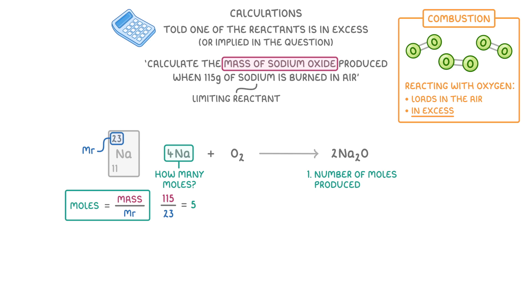Then by looking at our balanced equation, we can find the ratio between the sodium and sodium oxide, which is 4 to 2, or more simply 2 to 1. And so if we use 5 moles of sodium, we know we must produce 2.5 moles of sodium oxide.